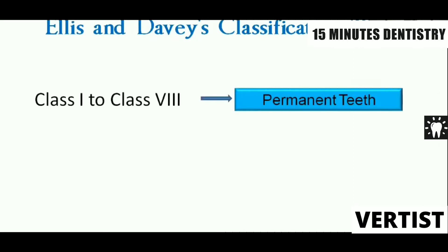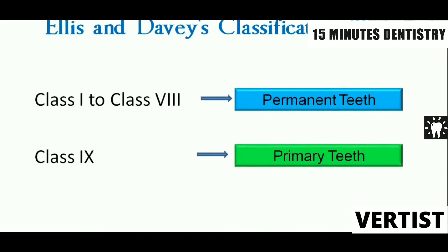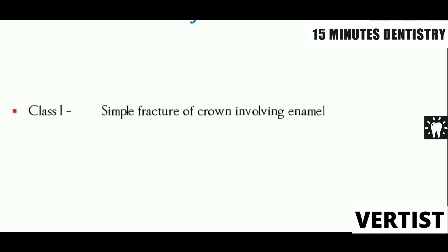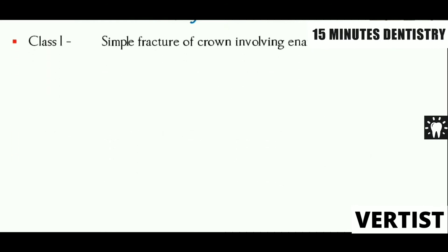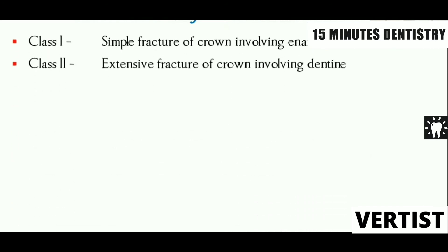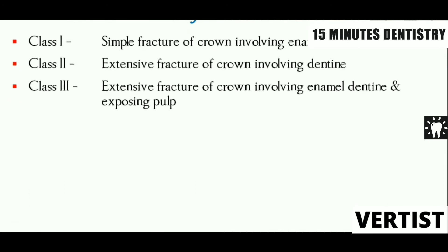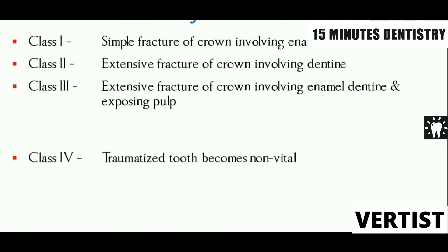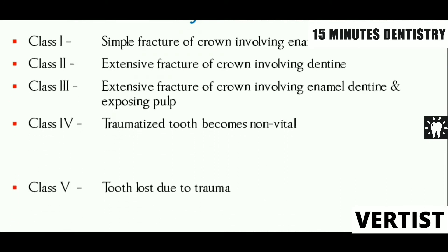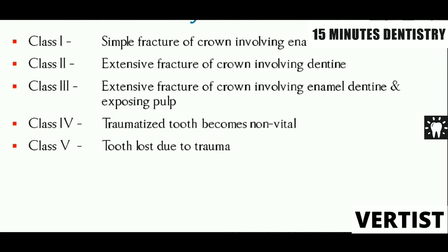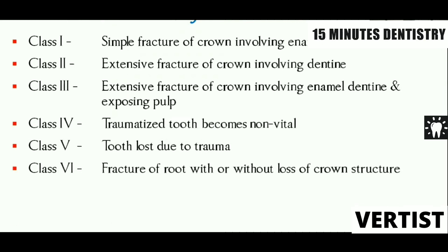LSNDV's classification has a total of nine classes. Class 1 to 8 is for permanent teeth and class 9 is for primary teeth. We'll see one by one what these categories are. You can see class 1 to 9 on the screen and we'll see photographs of each to better understand what is class 1 to class 9.